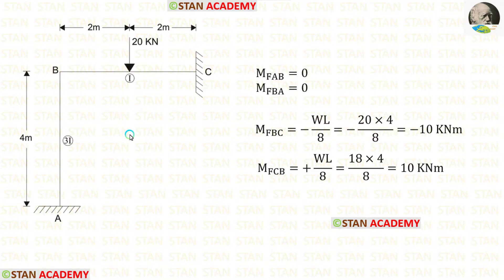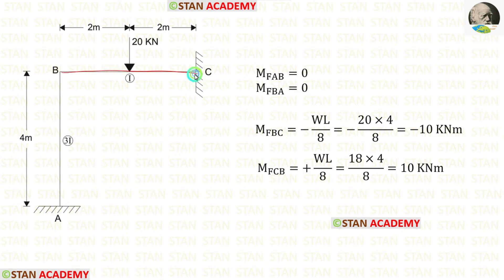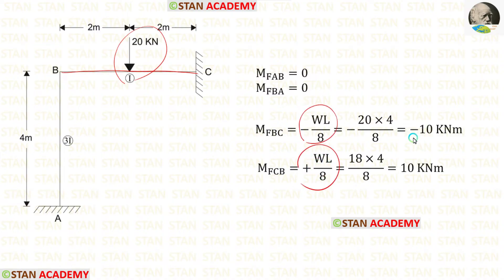Now let us find the fixed end moments. In column AB, there is no load, so the fixed end moments will be zero. In span BC, we have a point load acting at the center. Using the standard formulas, we can find the fixed end moments for BC.